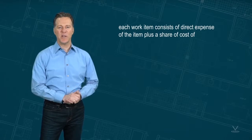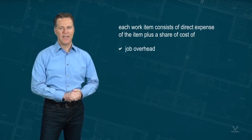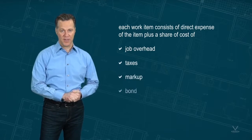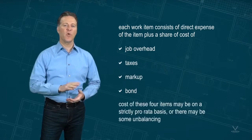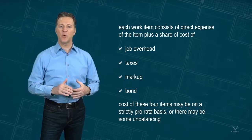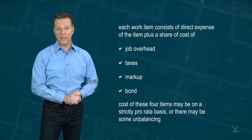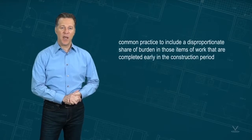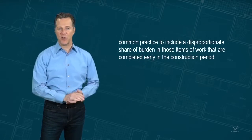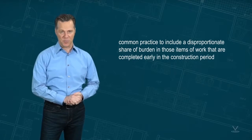The cost shown in column 1 of Figure 3 for each work item consists of the direct expense of the item plus a share of the cost of job overhead, taxes, markup, and bond. The cost of these four items, often called job burden, may be on a strictly pro-rated basis, or there may be some unbalancing. It's common practice to include a disproportionate share of the burden in those items of work that are completed early in the construction period.